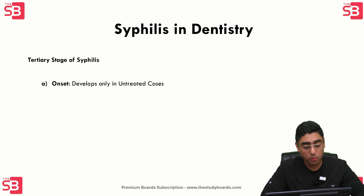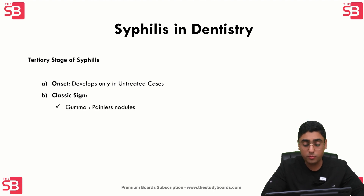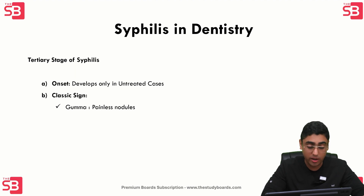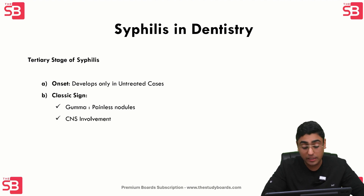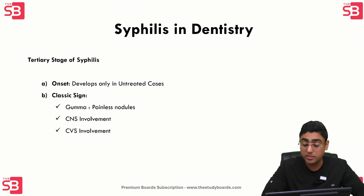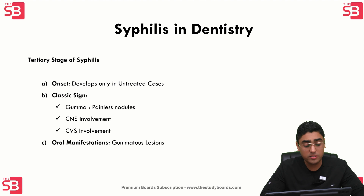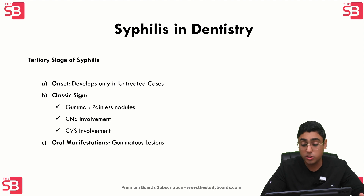Tertiary syphilis develops only in untreated cases. The classical signs include gumma — painless nodules that can ulcerate and cause tissue destruction. There is also CNS involvement where the patient can present with neurosyphilis, which can be potentially fatal. The third is cardiovascular involvement, which can lead to serious complications. Oral manifestations include gummatous lesions in the oropharynx, which can potentially cause perforations or even osteomyelitis.